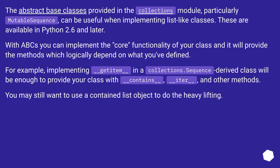The abstract base classes provided in the collections module, particularly MutableSequence, can be useful when implementing list-like classes. These are available in Python 2.6 and later. With ABCs you can implement the core functionality of your class and it will provide the methods which logically depend on what you've defined. For example, implementing __getitem__ in a collections.Sequence-derived class will be enough to provide your class with __contains__, __iter__, and other methods. You may still want to use a contained list object to do the heavy lifting.